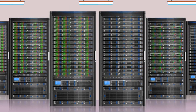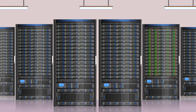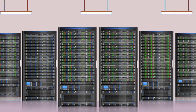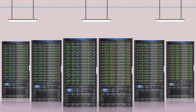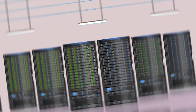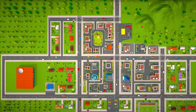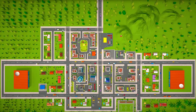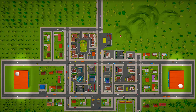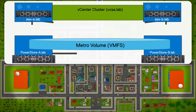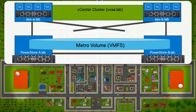The admin points out that the company's compute room is fully utilized — they have no room to grow. But they do have plenty of room in their second compute room on the other end of the city. He suggests installing the servers there along with a Dell PowerStore with Metro Volume for local storage for the new servers.